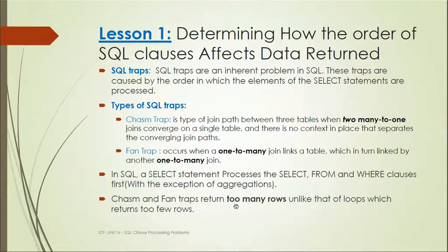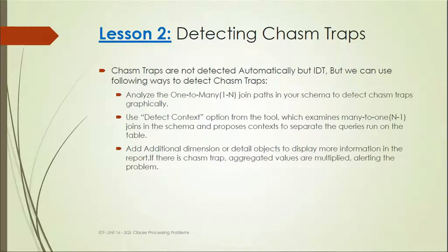So these traps return too many rows. We saw earlier that loops return too few rows, so this is opposite of loops - the chasm and fan traps.